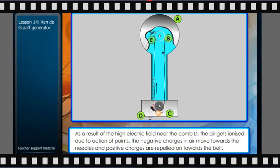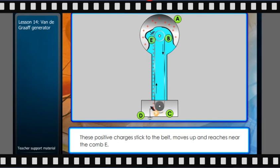As a result of the high electric field near the comb D, the air gets ionized due to action of points. The negative charges in air move towards the needles and positive charges are repelled towards the belt. These positive charges stick to the belt, move up and reach near the comb E.